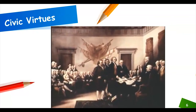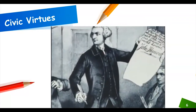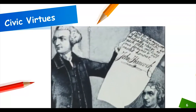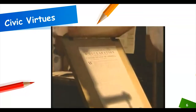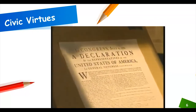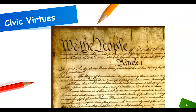Where do these values come from? A long time ago, our forefathers set forth the rights of every American citizen in some very important documents. One document is the Declaration of Independence, which guarantees equality, life, liberty, and the pursuit of happiness. Another document is the Constitution, which guarantees freedom of religion, speech, and the press.